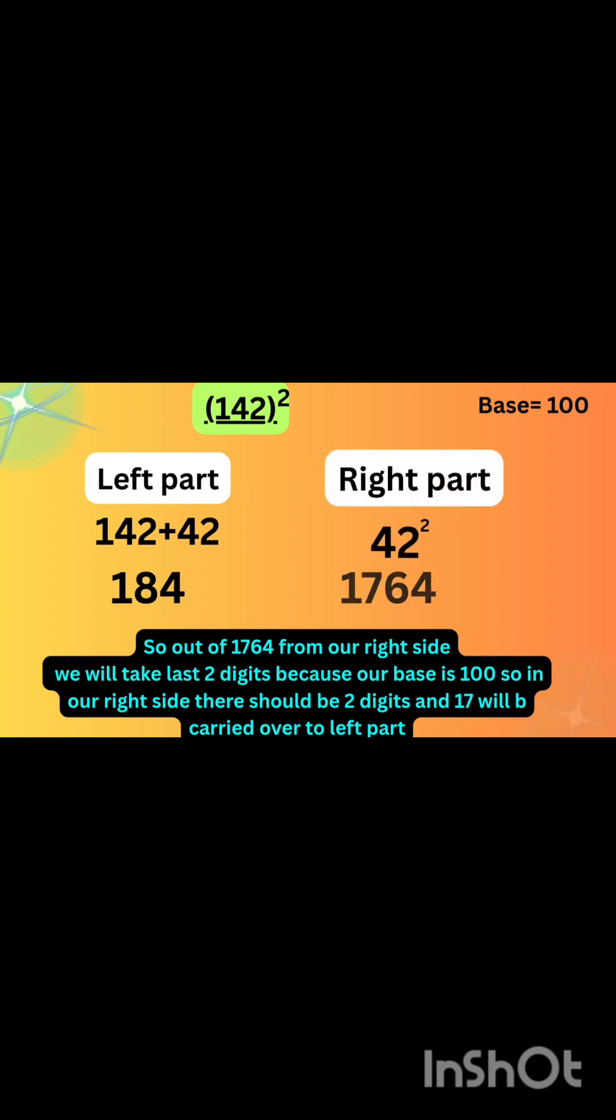So now on the right side we get four digits, but our base value was 100. So in our right side we will take two digits, and the rest will be carried over.